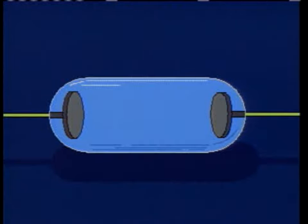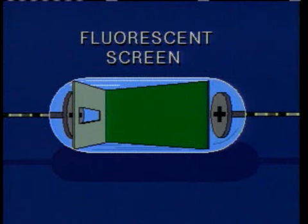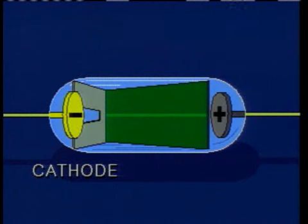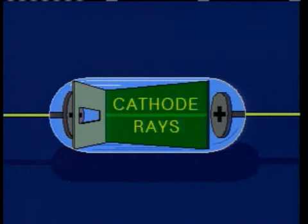When such a highly evacuated tube has a fluorescent screen placed in it, the appearance of a glowing line on the screen suggests that something is moving between the cathode and the anode. Cathode rays was the name eventually given to these mysterious somethings.